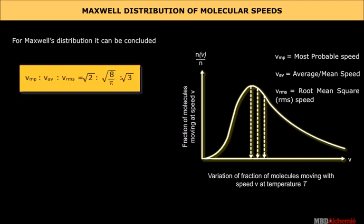From Maxwell distribution it can be concluded: most probable speed : average speed : root mean square speed is equal to √2 : √(8/π) : √3. Root mean square speed is greater than average speed is greater than most probable speed.